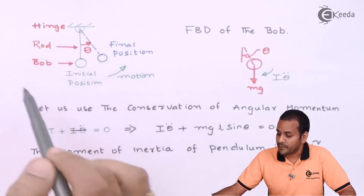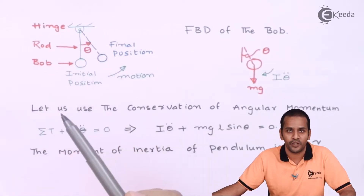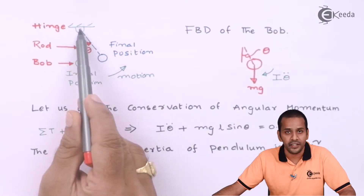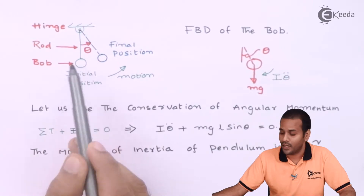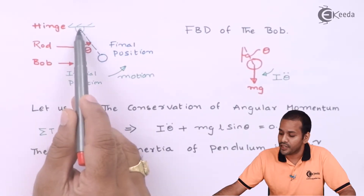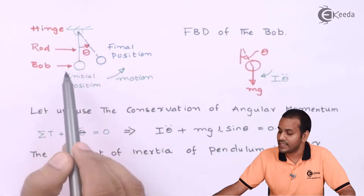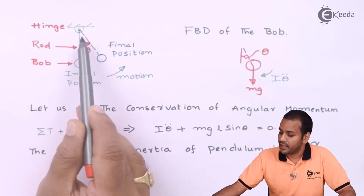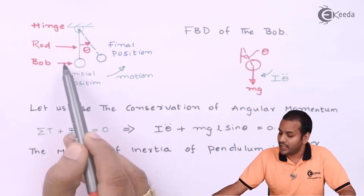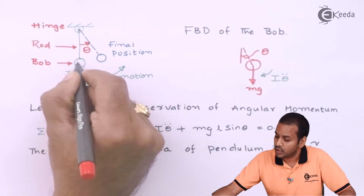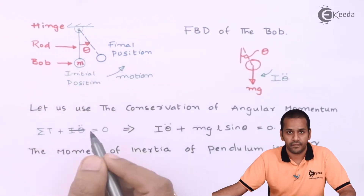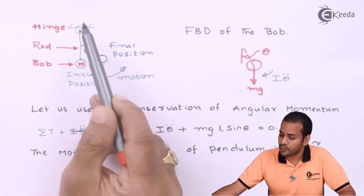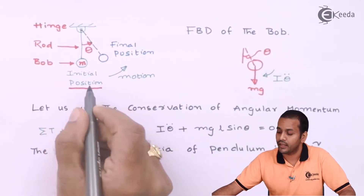Here you can see a simple pendulum. This represents the hinge; this is the rod; and this is the bob. As already stated, there is no friction at the hinge, no air resistance, and no drag force as the pendulum swings. The rod is massless and the mass of the bob is small m (in kg). This position represents the initial position.